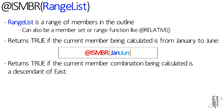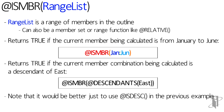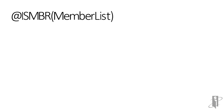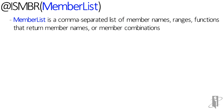Or I could use a function that returns a range or a list of members. In my case, I'm going to say isMember @Descendants(East), which demonstrates using functions that return members or member combinations.